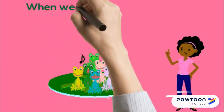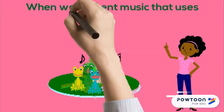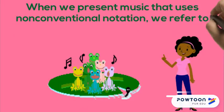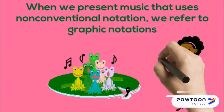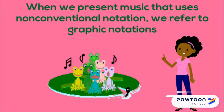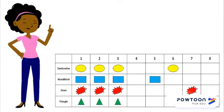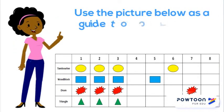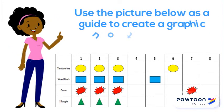When we present music that uses non-conventional notation, we refer to graphic notation as an example of non-conventional notation. Listen to the music piece and create a non-conventional notation based on it. Use the picture below as a guide to create a graphic notation of the music. Play music from graphic scores.